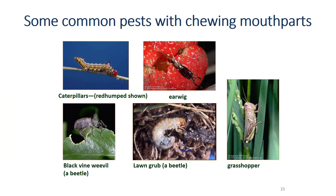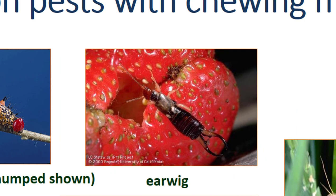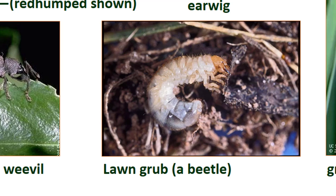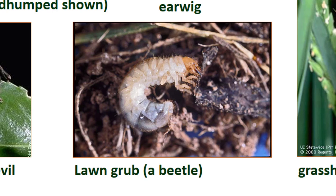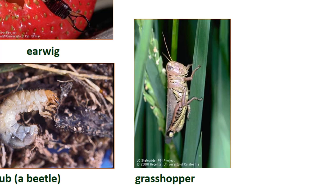Here are some common insect pests with chewing mouthparts. Caterpillars are the larvae of butterflies and moths — they come in many colors and sizes and may attack any succulent part of the plant, including leaves, buds, flowers, fruit, or roots. Earwigs have pinchers at their tail end but cannot hurt people — they feed on leaves, shoots, flowers, and soft fruit. The black vine weevil adult feeds on plants such as rhododendron, while its larvae feed on plant roots. Lawn grubs are the larvae of beetles such as the masked chafer — they feed on turf roots and feeding can be so extensive the lawn can be rolled up like a carpet. Grasshoppers feed on a variety of plants and usually aren't major pests except where landscapes are next to agricultural or uncultivated lands.